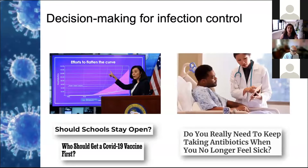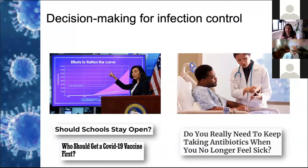Individuals tasked with deciding how to optimally treat or control infectious diseases at the local or global level are often faced with difficult questions. For example, in controlling an epidemic, a public health official might have to decide which businesses or activities might need to be closed to reduce transmission, or which groups must be prioritized for vaccination. A clinician might have to decide what's the optimal dose and duration of drug therapy to treat an infection, but also to prevent the development of drug resistance. These questions can be very difficult to answer with experimental methods — we don't have parallel universes to try out different policies, clinical trials can be extremely expensive and time-consuming, and often we need to make decisions with incomplete information.